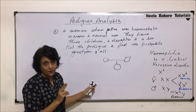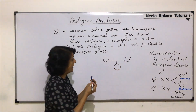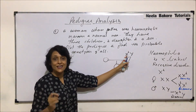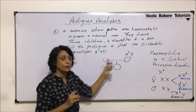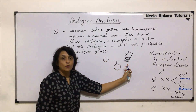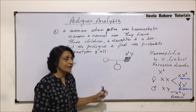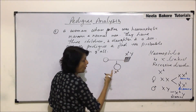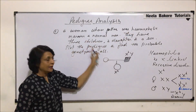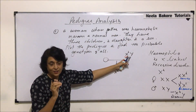Coming back to the question: since the woman's father was hemophilic, his genotype is X^h Y. From the father, the X chromosome goes to daughters and Y goes to the son. So the daughter — our starting woman — has received the disease-containing, recessive X^h from her father.